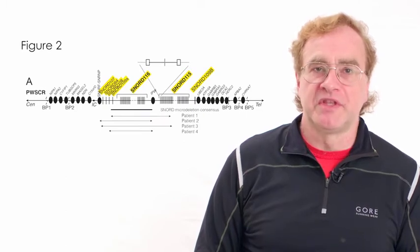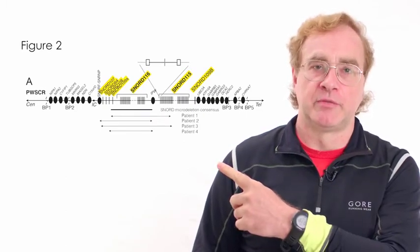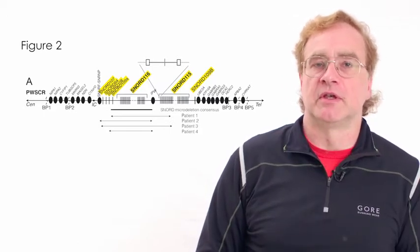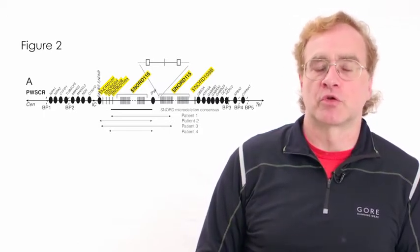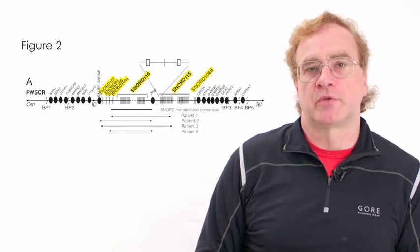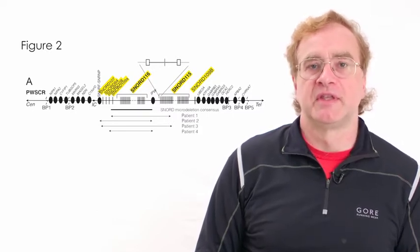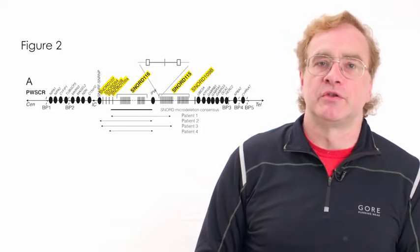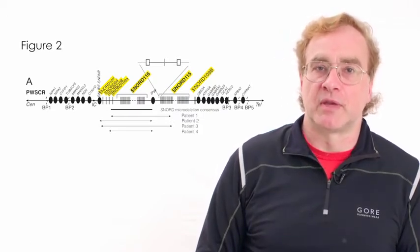The genetic reason for Prader-Willi syndrome has been worked out over the last 10 or 15 years and is due to a loss of a gene region on chromosome 15. And strikingly, this gene region contains six snoRNAs and microdeletions indicate that these snoRNAs are essential for the disease phenotype.